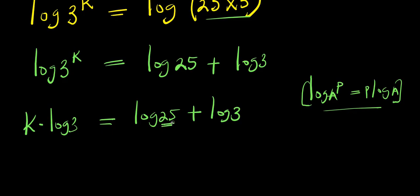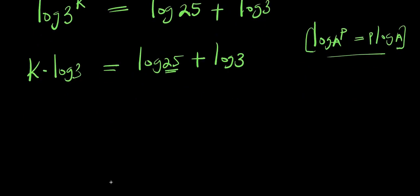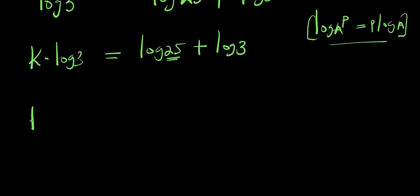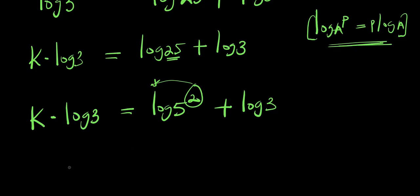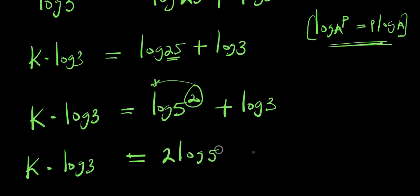Now, 25 can be expressed as 5 to the power of 2. So I will have k times log 3 equals log of 5 squared, that is 25, plus log 3. Going by the same identity, the 2 comes over, giving k times log 3 equals 2 times log 5 plus log 3.